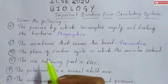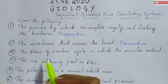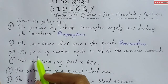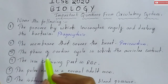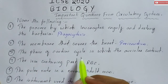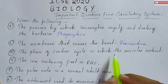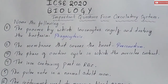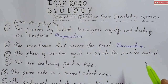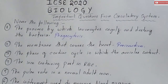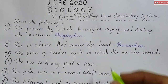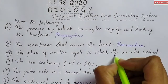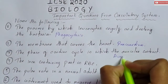Moving ahead to question number three: the phase of cardiac cycle in which the auricles contract. The phase of the cardiac cycle in which the auricles contract is called auricular systole.